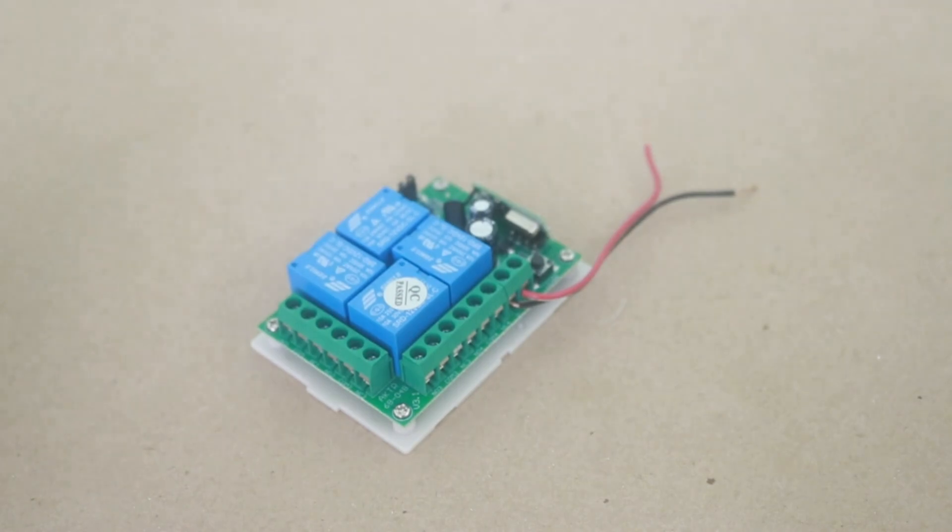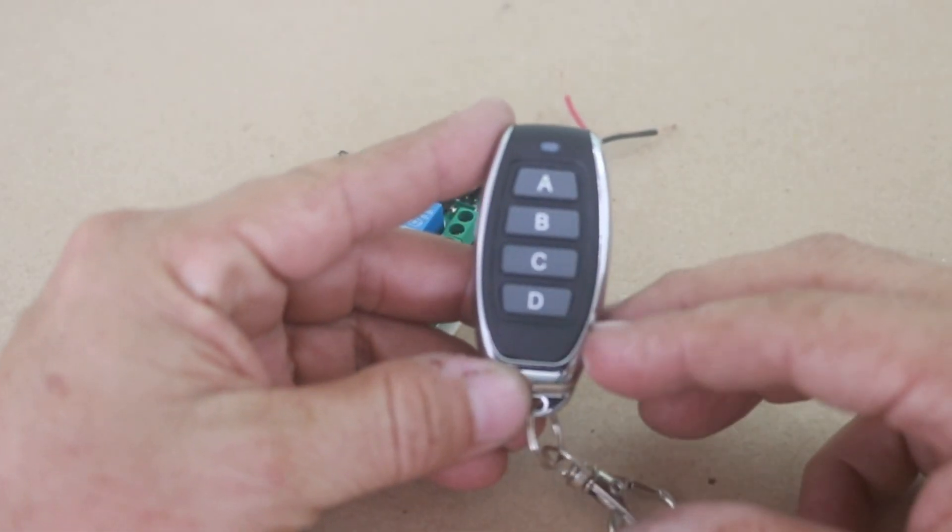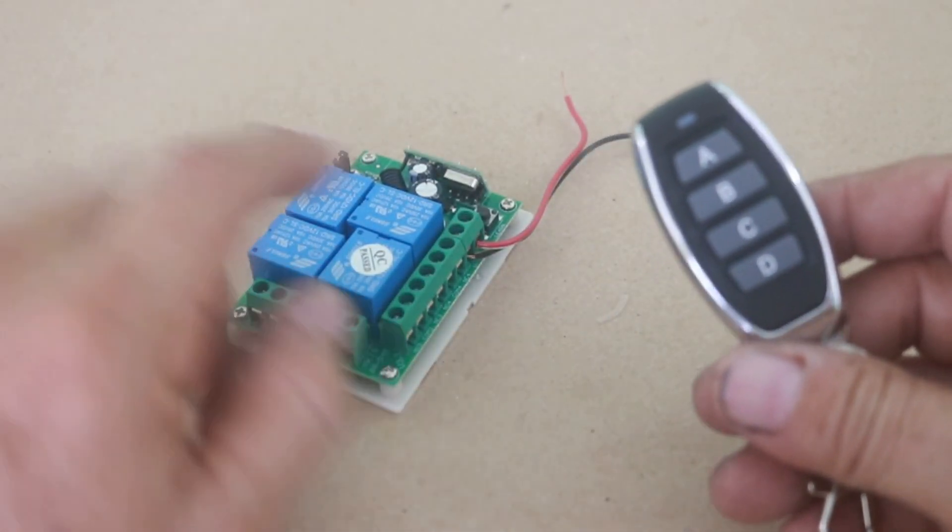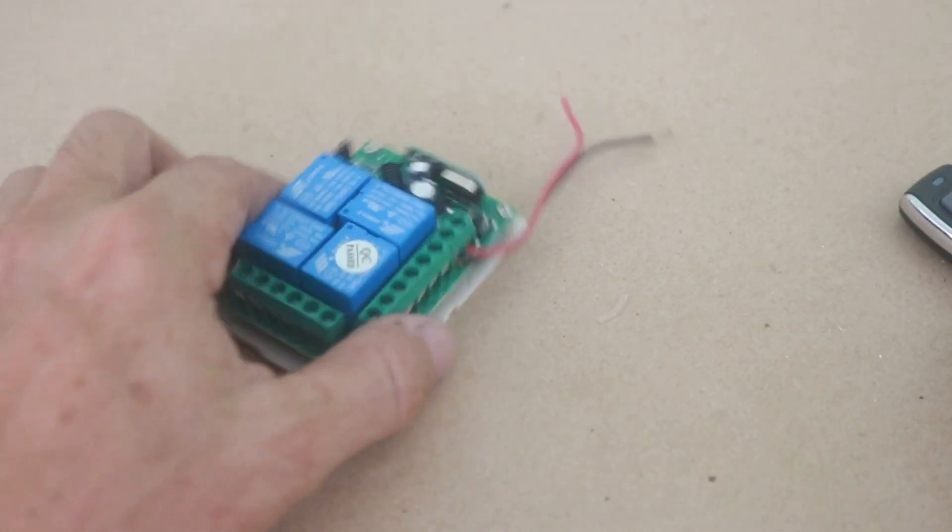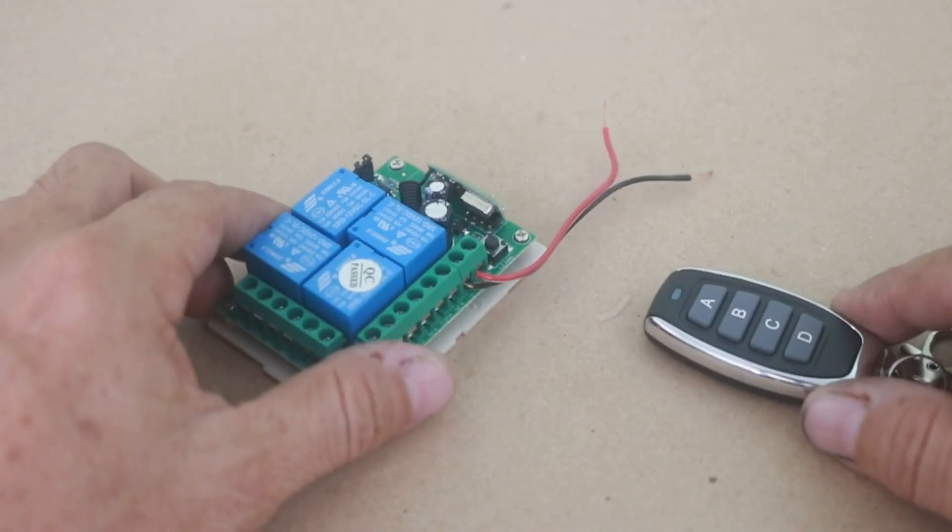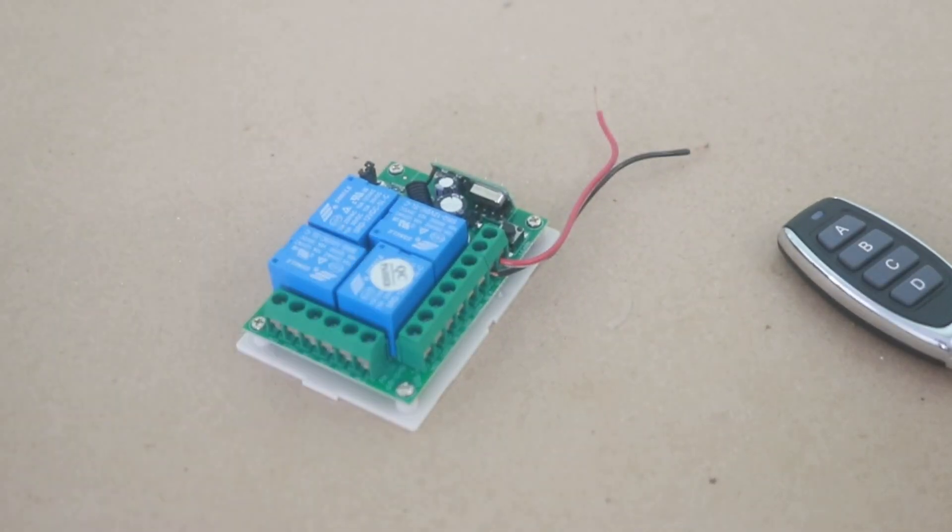This lets you add a remote control for on-off to any device that you want. It comes with a key. You can see it has four channels and the way it works is very simple. The key communicates with the receiver so it activates one of any of the four relays, so you can turn on and off four devices that you connect to the receiver.